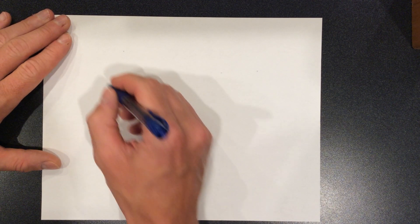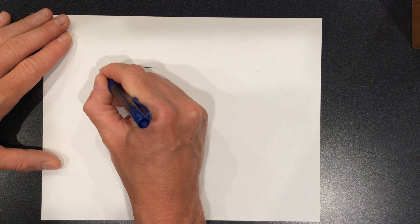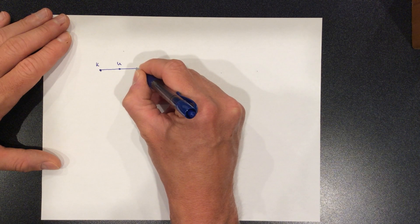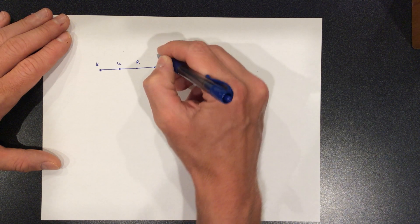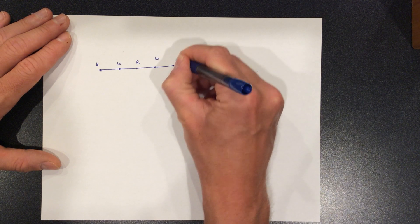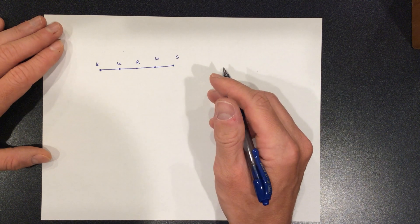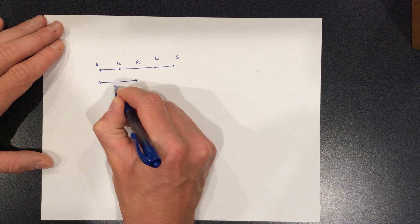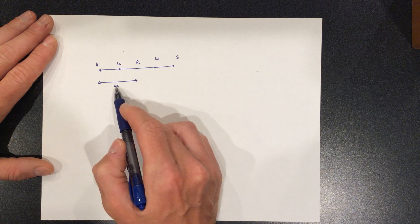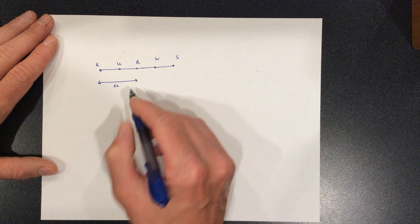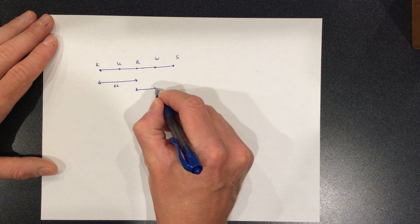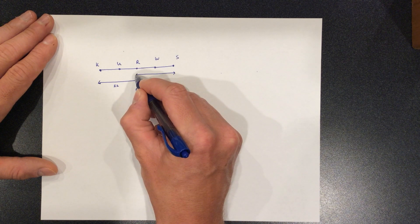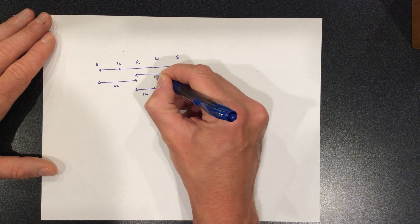Okay, let's take K, U, R, W, and S. So we have all of these line segments. And let's say that you know that this distance is 22. So you know that the line segment KR is 22. You know that this distance is 14. And you know this distance RS is 30.